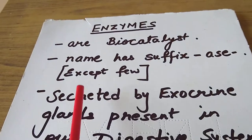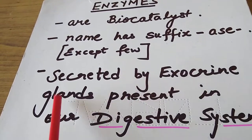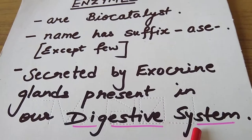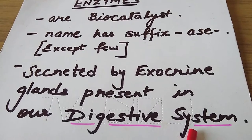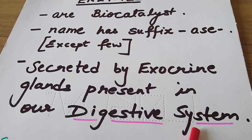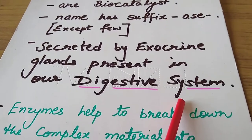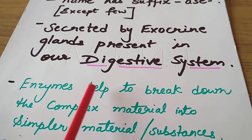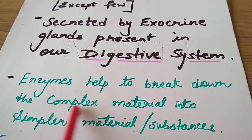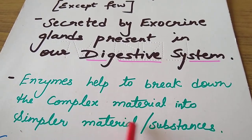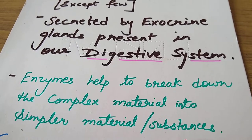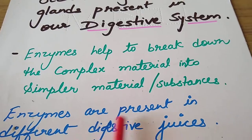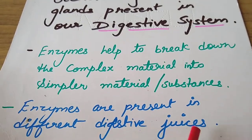One more point: enzymes are secreted by exocrine glands present in our digestive system, such as salivary glands, pancreas, gastric glands, and intestinal glands — they are secreting different juices. Enzymes help to break down complex material into simpler substances, so that digestion takes place. Enzymes are present in different digestive juices.